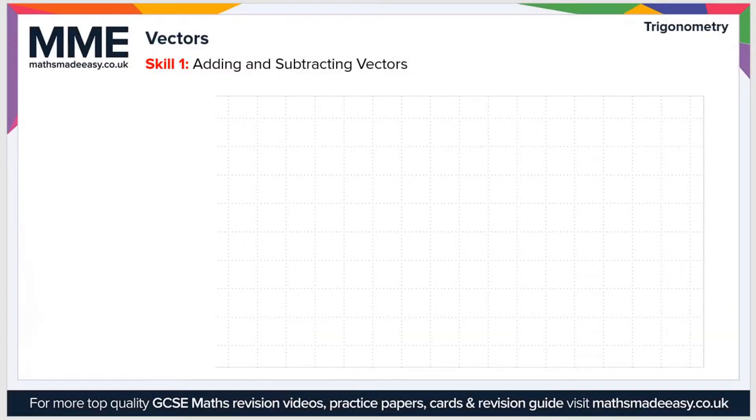Welcome to the Maths Made Easy tutorial on vectors. A vector is a quantity that has both a magnitude and a direction. If I draw a vector like this and call it A, then the magnitude is the length of the arrow, and the direction is obviously the direction that the arrow is pointing in.